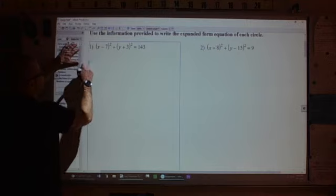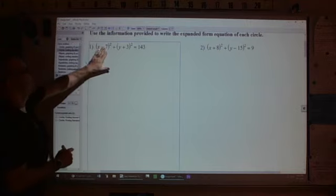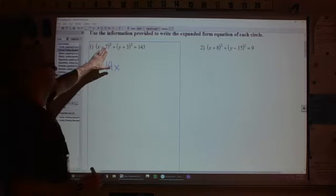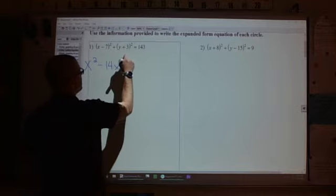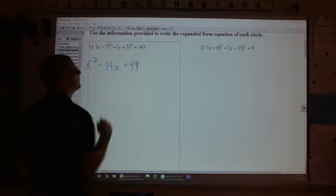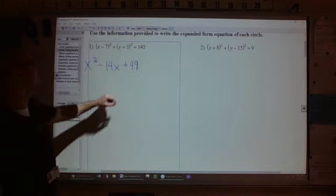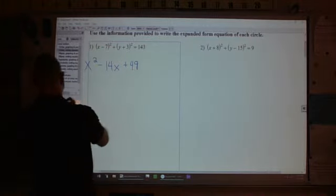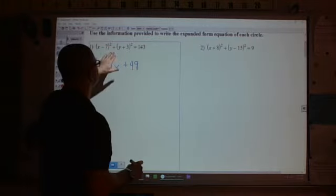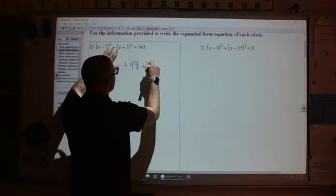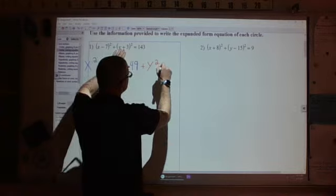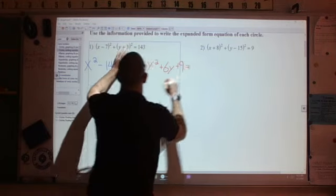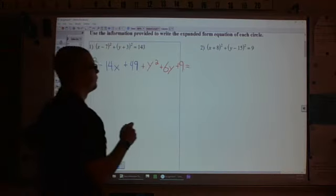This one is going to be x squared, and then we have minus 7x minus 7x, so minus 14x, and then negative 7 times negative 7 plus 49. And then we would have y plus 3 expanded as well, so then added on to that, we would get plus y squared plus 6y plus 9 equals our initial 143.